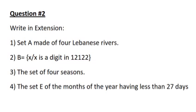In question number 2, we need to write the following sets in extension. So set A made of 4 Lebanese rivers. So we say, for example, A is Asi, Wazani, Awali. You can choose any 4 Lebanese rivers.